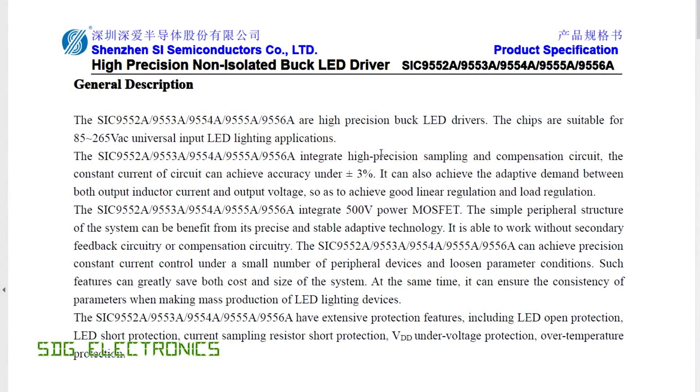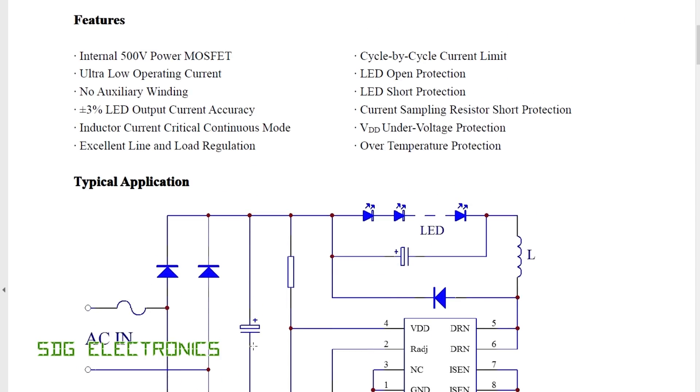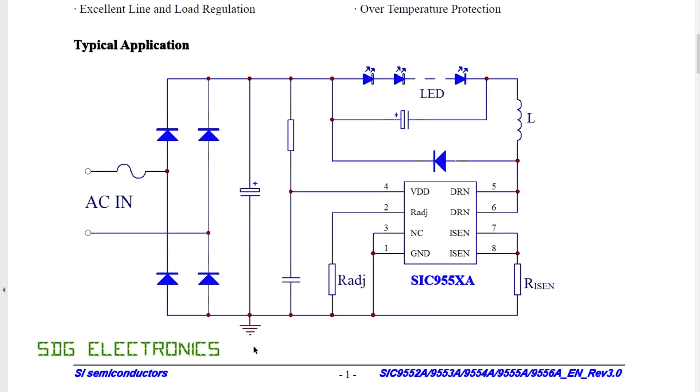So this is the data sheet for the LED driver we've got on this board. It's the SIC 9552A, which I think is the lowest power device out of the lot. And it's just a plain buck regulator. Because we don't need the isolation in this design, it's a fully enclosed LED strip light. There's no chance of someone coming into contact with the LEDs. We don't need any isolation. So there's no more complex flyback or any other kind of converter design. It's just a plain buck regulator.